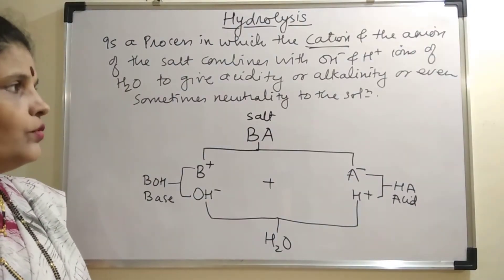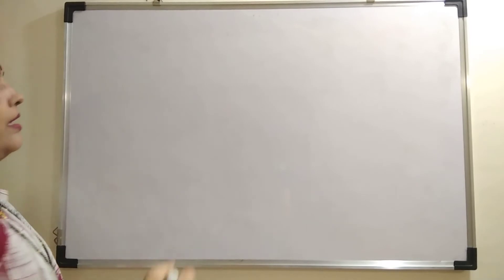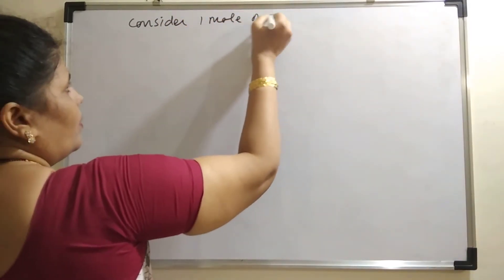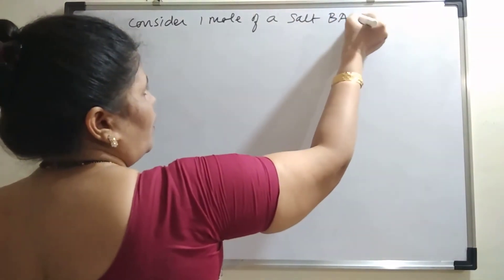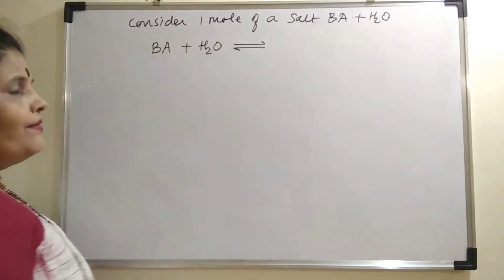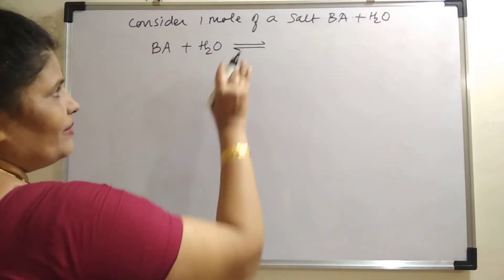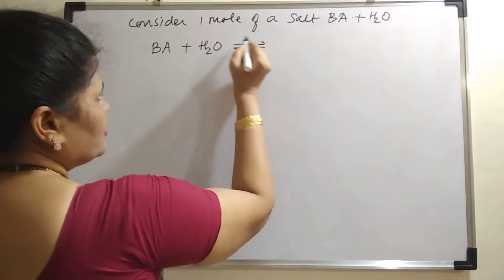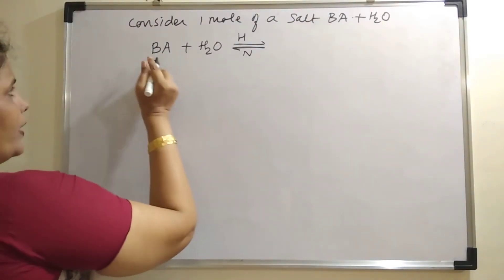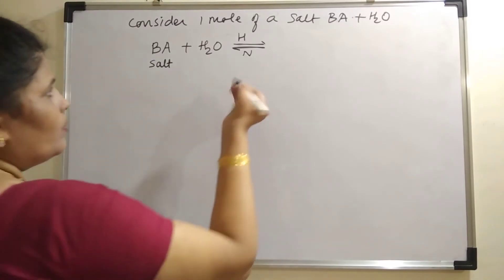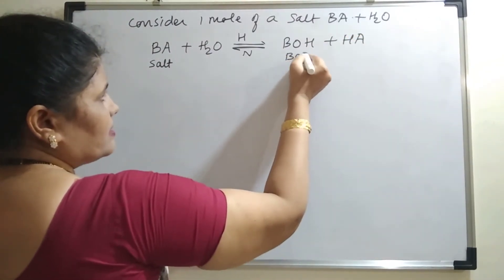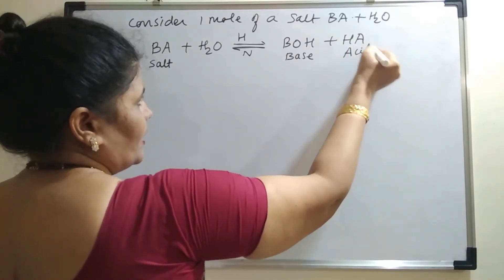Now let us see what is the hydrolysis constant and the relation. Consider one mole of a salt BA dissolved in water. The reaction is: BA + H₂O ⇌ BOH + HA. Always use a reversibility sign because the forward reaction is hydrolysis and the reverse reaction is neutralization — that is, acid and base react to give salt and water. So salt plus water gives BOH (a base) and HA (an acid).